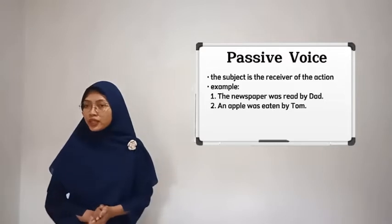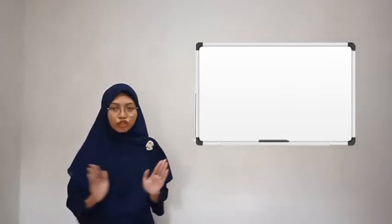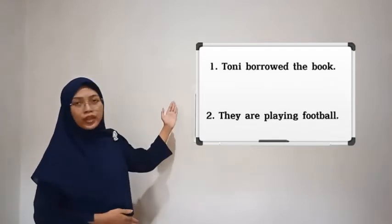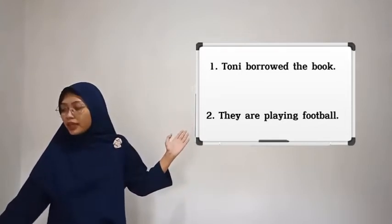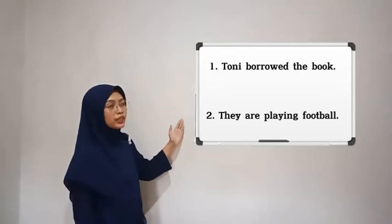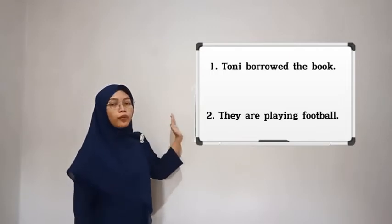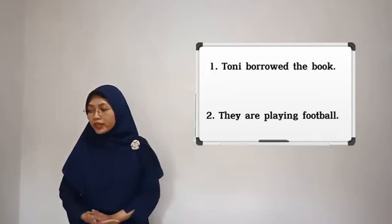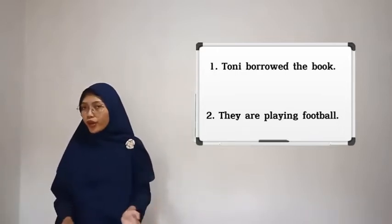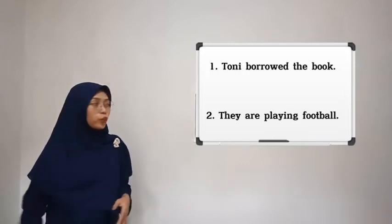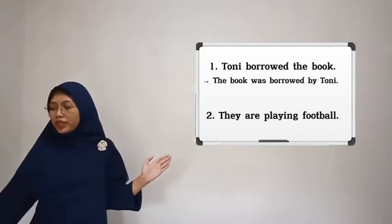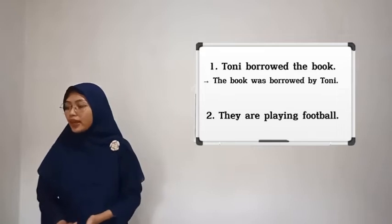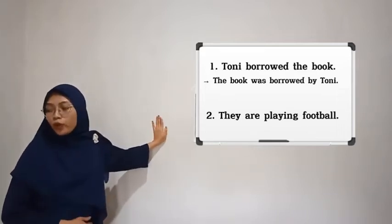Now let's try to change active voice into passive voice. I have two examples here and we're going to try to change them. The first example in active voice is: 'Tony borrowed the book.' If we change it into passive voice, the order of the words will be changed — it becomes: 'The book was borrowed by Tony.' As you can see, the order of the words is interchanged.